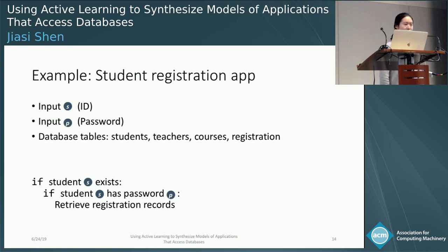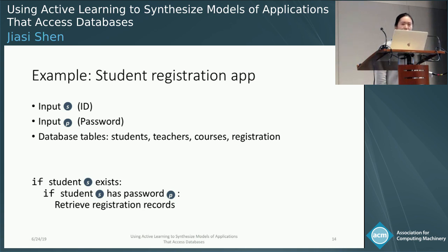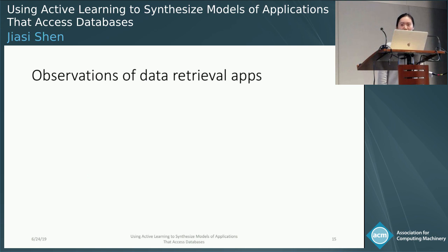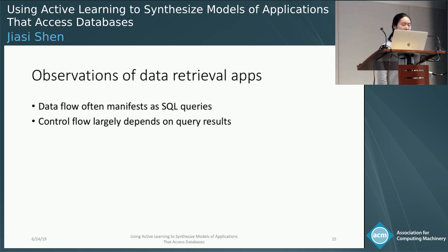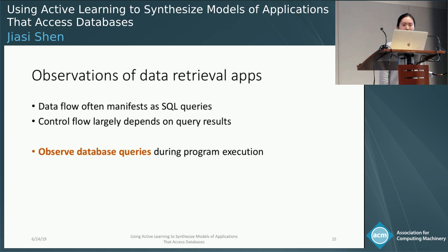The program first looks up the student. If the student exists, it then looks up the password. If the password matches, it then retrieves the registration records for the student. So in this program and many other data retrieval apps, there's an interesting pattern. The data flow often manifests as SQL queries, and the control flow largely depends on the query results. What this means is that if we observe the database queries during the program execution, we can potentially learn a lot about the program.